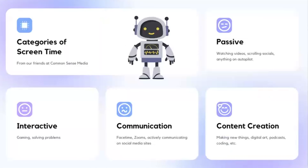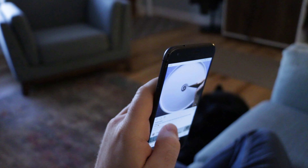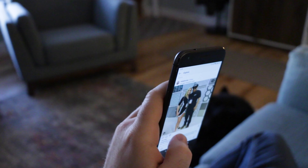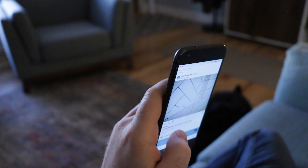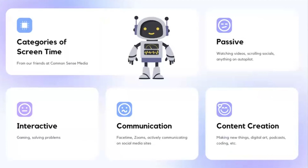Common Sense Media has come up with these categories of screen time. The first one is passive. This is basically scrolling through social media mindlessly, scrolling our feeds — hours and hours on Twitter or Pinterest — probably a lot of how we use technology as adults to unwind after a rough day. It's not the best use of technology and it's not good for us physically or mentally.